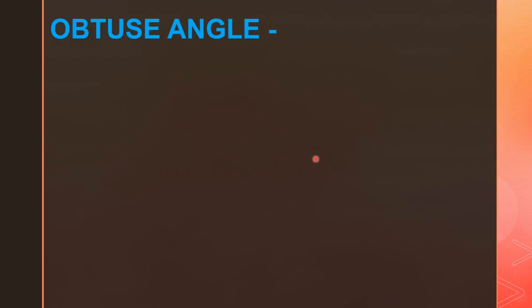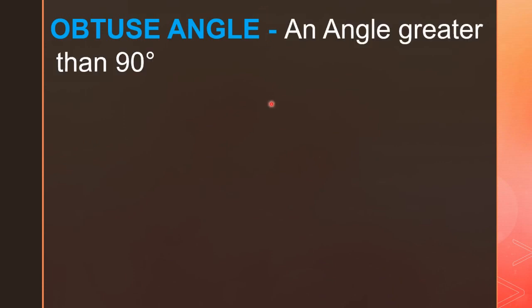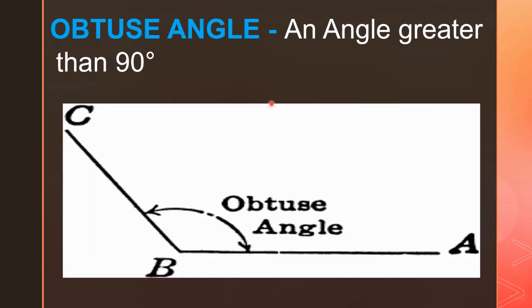Next is the obtuse angle. An angle greater than 90 degrees is called an obtuse angle. More precisely, an angle greater than 90 degrees but less than 180 degrees is called an obtuse angle. Here, angle TBA is an obtuse angle.